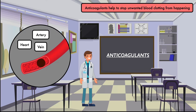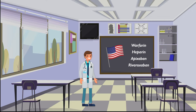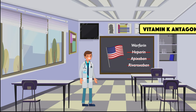Doctors prescribe them because a blood clot can get stuck in an artery, vein, or in the heart and prevent blood from flowing to tissues and vital organs. Warfarin isn't the only anticoagulant available. There are several others on the market in the United States like heparin, apixaban, and rivaroxaban, but none of them have the same mechanism of action.